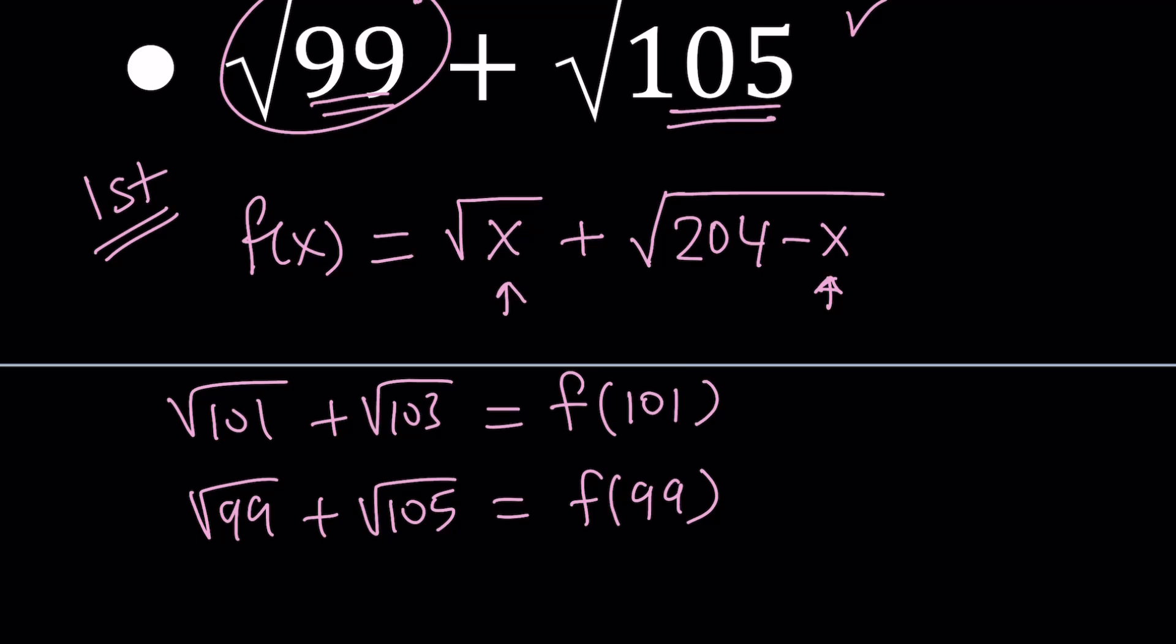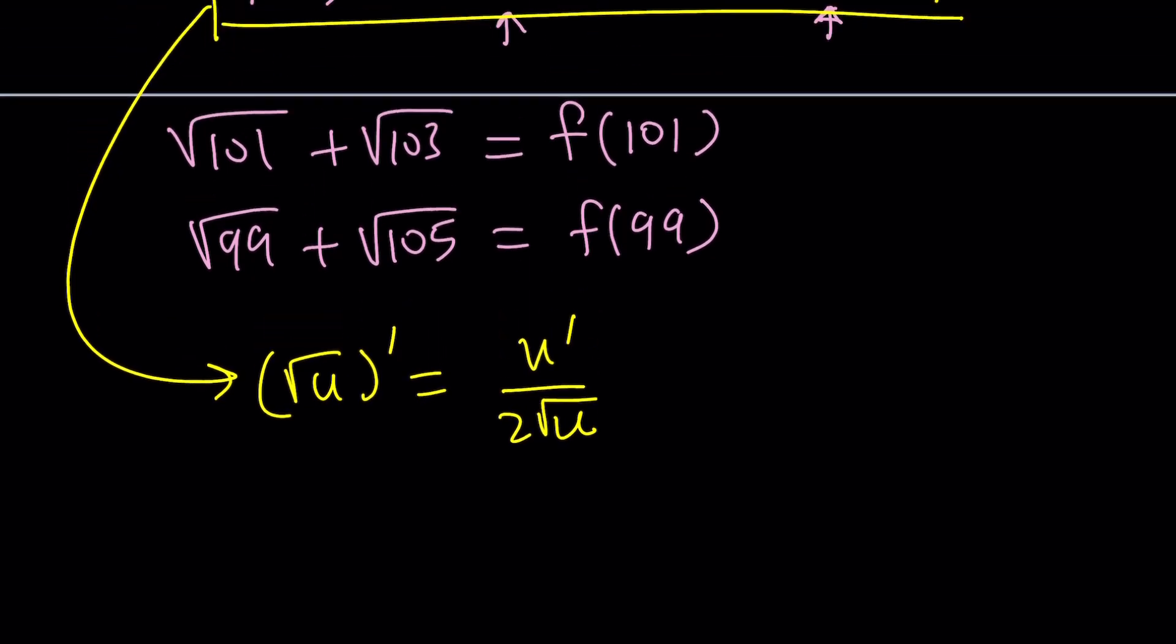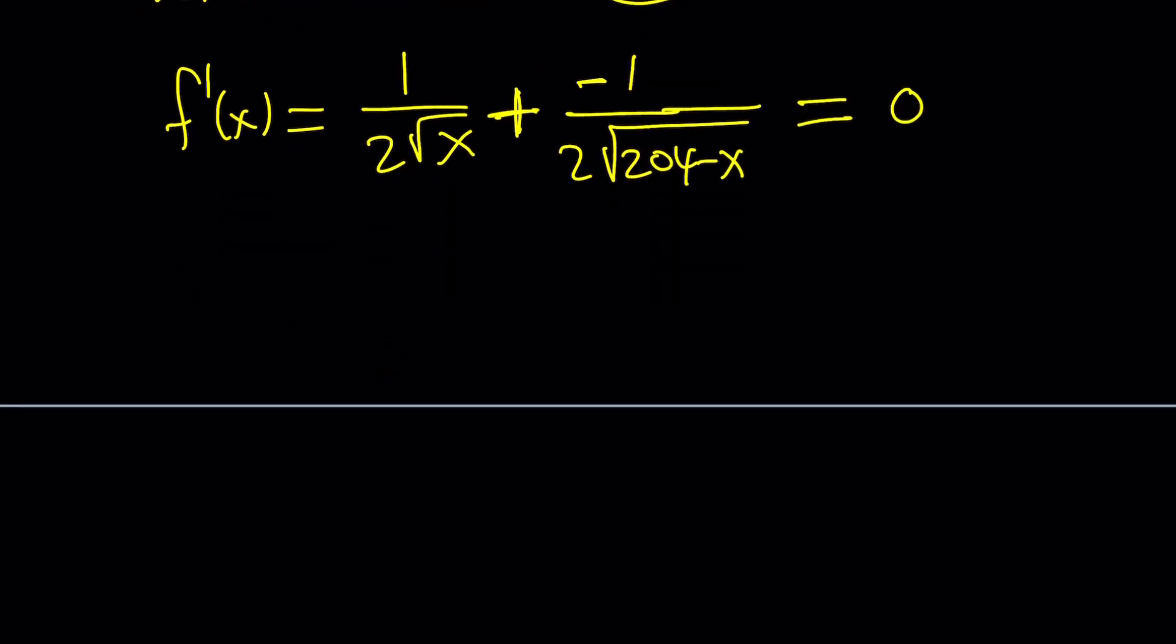Once we define this function, we can go ahead and investigate it and do a little bit of calculus on it. We're only going to differentiate and look at minimum or maximum value. So let's go ahead and differentiate this function. How do you differentiate the square root of u? You differentiate the inside and divide by 2 times the original function. So f prime is going to be 1 over 2√x plus the derivative of the inside here is negative 1 divided by 2√(204-x). And then our goal is to set this equal to 0.